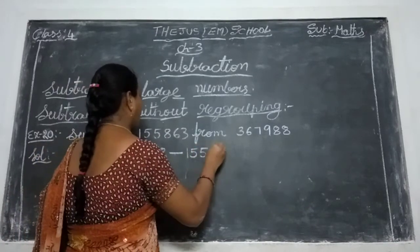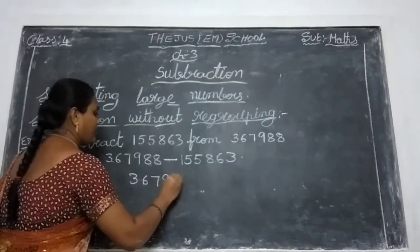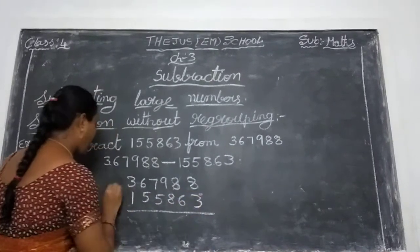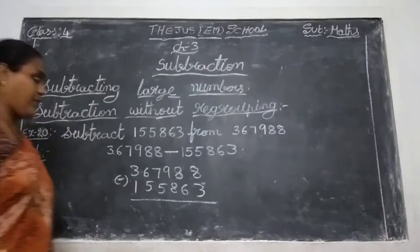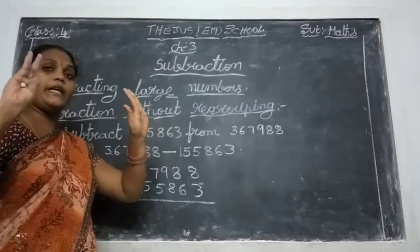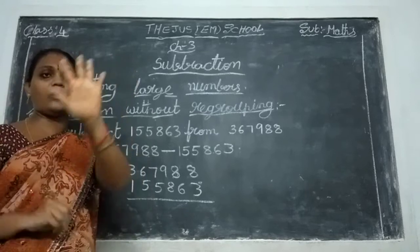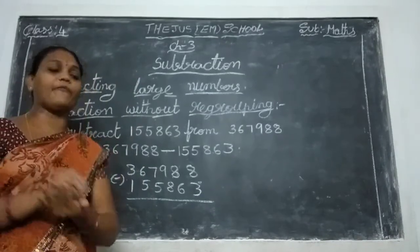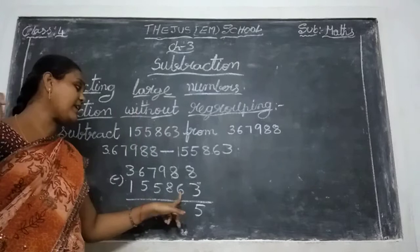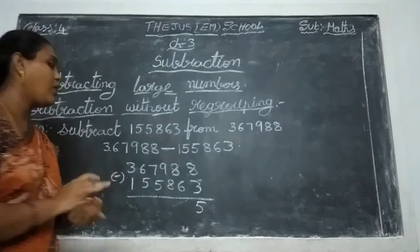Given numbers, write in order. Subtraction means straight fingers, less fingers. First number is 8 — take 8 fingers. Second number is 3 — close 3 fingers. Remaining: 1, 2, 3, 4, 5. Write 5. Next, take 8 fingers, close 6 — remaining 2 fingers. Write 2.